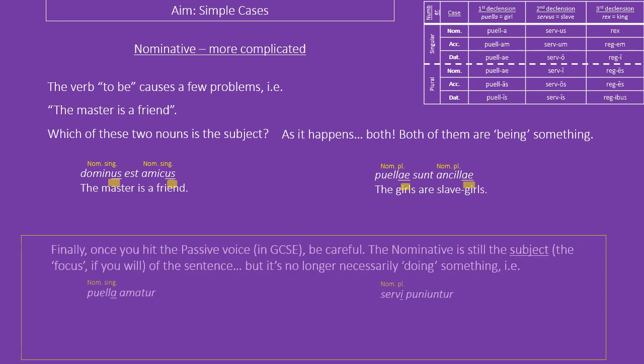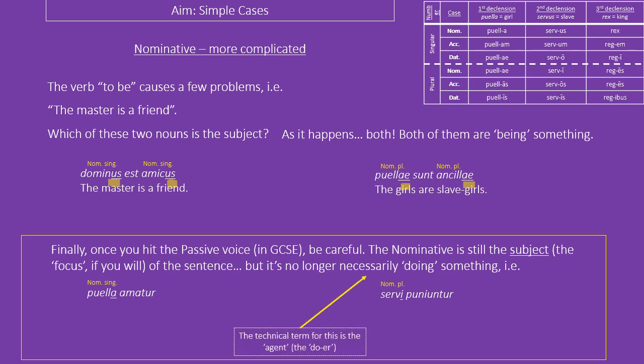The next bit is just for GCSE students. This only applies once you start talking about the passive voice or passive verbs. If you are not at GCSE yet, please do not translate sentences like this — it's almost certainly going to be wrong. Once you have got to that point, the definition 'the nominative is the subject' still works, but you can no longer really talk about it doing something because passive verbs get slightly awkward — it is no longer the agent, the doer in the sentence, although it is still the subject or the focus. So: the '-tur' ending means something is happening to the puella even though she's nominative — 'the girl is loved.' And the second sentence: 'the slaves are punished.'